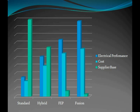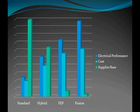This bar graph gives a generalized overview of the impact of each form of lamination — first by performance, second by cost, and third by the number of PCB suppliers offering each method. Standard is the lowest performance and lowest cost method, moving upward to fusion bonding as the highest performing and most costly. Nearly all PCB suppliers offer standard lamination, fewer offer hybrid, only a small number offer FEP bonding, and only a few PCB suppliers in the US offer fusion bonding.